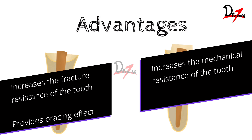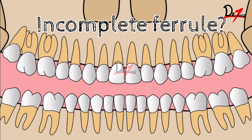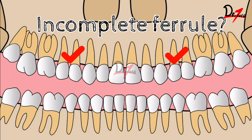What if we only have partial ferrule? Certain terms and conditions apply, but many teeth with partial ferrule can still be restored if we understand the forces acting on each tooth. For maxillary incisors, forces are directed labially outward, and the palatal surface resists this force — so palatal ferrule is mandatory. Even with only palatal ferrule, we can restore maxillary incisors. For mandibular anteriors, forces come from the labial aspect, so labial ferrule is required.